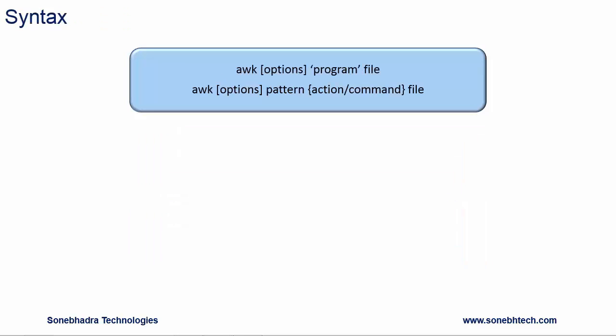Syntax. The syntax of awk is: awk, options, program, file. Here options are optional. File is the text file which awk will read line by line. Program includes the pattern, action, or command which will be enclosed within single quotes and applied on each line of the text file.